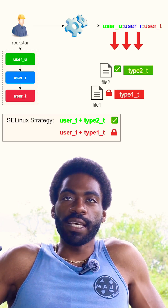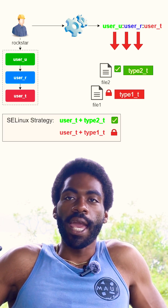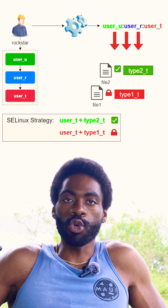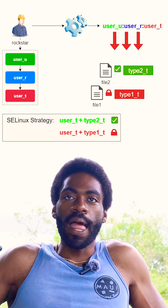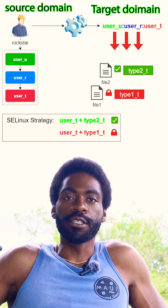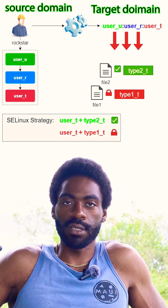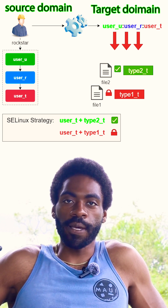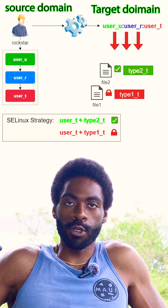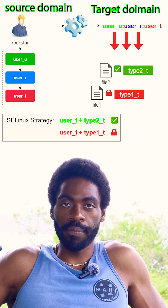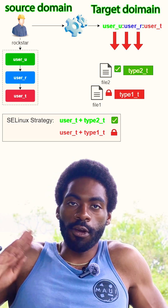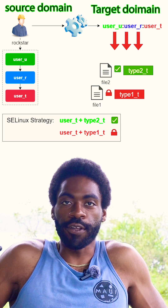With SELinux, there is a source domain and a target domain. The source domain is the stuff asking for resources. The target domain is the stuff providing those resources. SELinux gets very complicated, and it makes managing your Linux server somewhat harder than it needs to be. It's another layer of abstraction on top of what you already have configured, and it's another detail you have to consider when troubleshooting things and trying to figure out why stuff is not working.